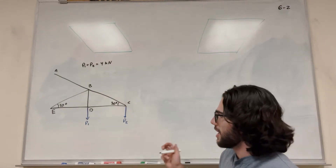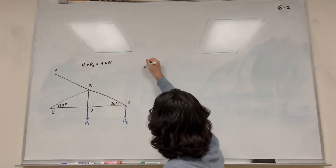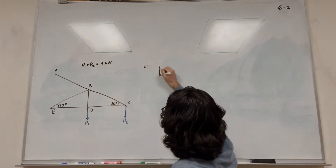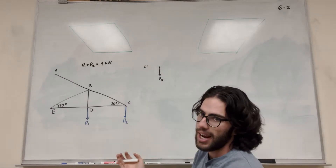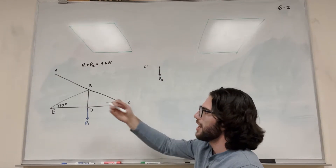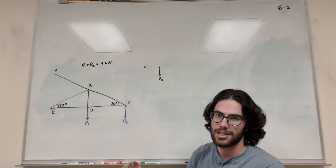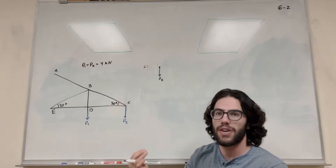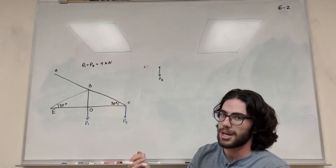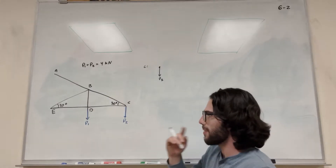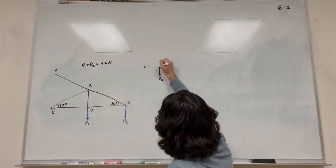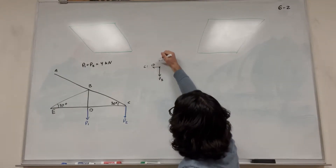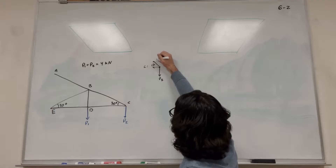So we want to draw a corresponding diagram at each one of these points. Let's start at C. We have P2 pushing down. We want to assume that every one of these forces is in tension, because if we assume they're all in tension, it's a lot easier to keep track of what's going on. And if we get a negative number, that means we're actually in compression. So we have CD over here, and then BC up here.